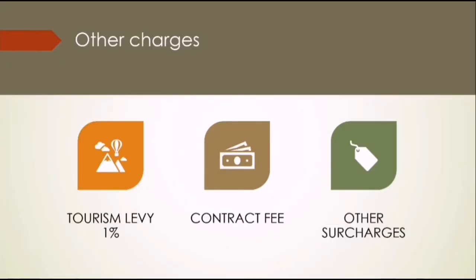After dealing with insurance, you will then have to deal with the other charges, which include the tourism levy. A tourism levy of 1% is charged on all tourism products. In cases where the levy is not already included, you will have to calculate 1% of the total fare calculation to determine your tourism levy. You also have your contract fee, which will be included in your handout or in your car hire scenario. Other charges can include, but are not limited to, car seats, additional drivers, car accessories, and so on.